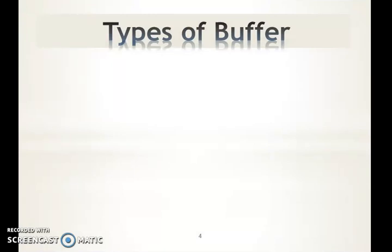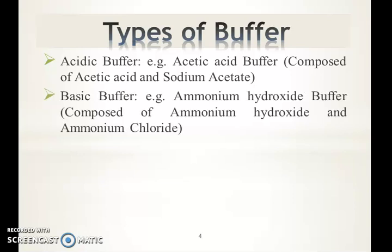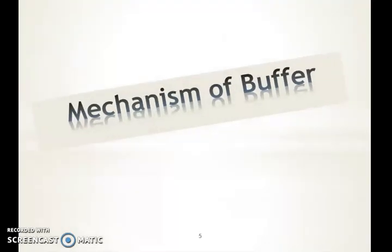There are three types of buffers. Acidic buffer is composed of acetic acid and sodium acetate, where acetic acid is the weak acid and sodium acetate is the strong conjugate base. Basic buffer is composed of ammonium hydroxide and ammonium chloride, where ammonium hydroxide is the weak base and ammonium chloride is its salt or strong conjugate acid. The third is neutral buffer, composed of salt of weak acid and salt of weak base — for example, ammonium acetate.